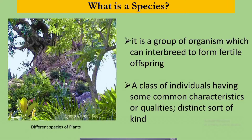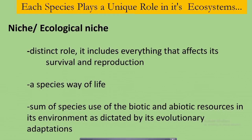Each species plays a unique role in its ecosystem, and it is called a niche or ecological niche. It is the distinct role of a species that includes everything that affects its survival and reproduction. Or it can also be defined as a species' way of life, or it is the sum of a species' use of the biotic and abiotic resources in its environment, as dictated by its evolutionary adaptation.